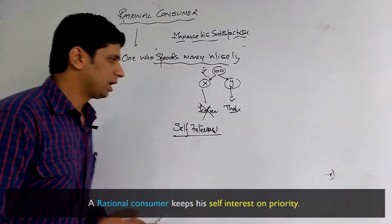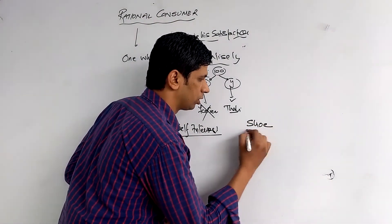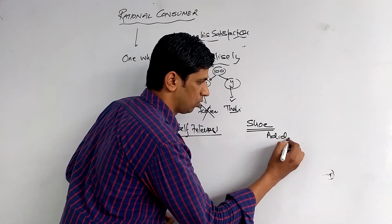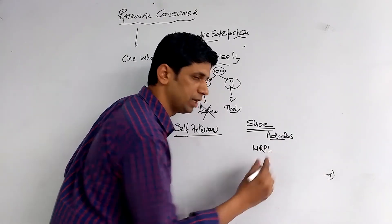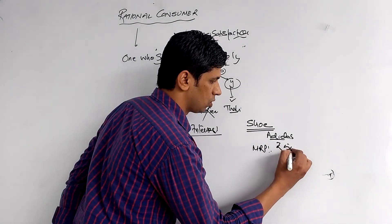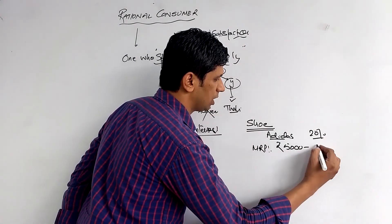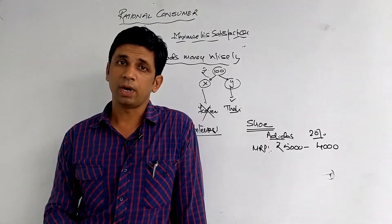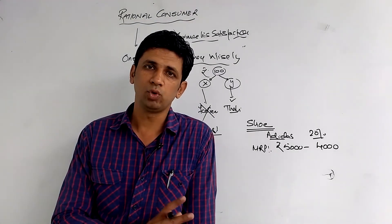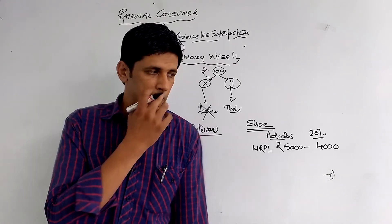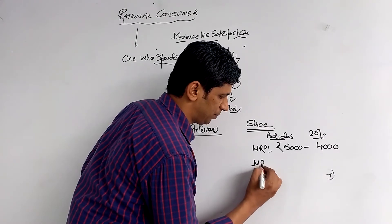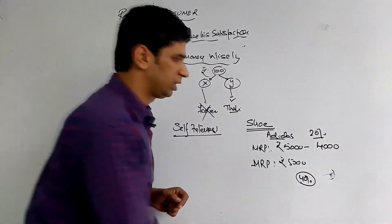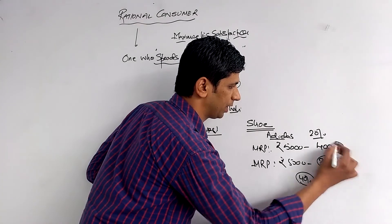For example, if you have to purchase a shoe, you find that the MRP of an Adidas shoe at the nearest outlet is Rs. 5000. With a 20% discount, you receive it for Rs. 4000. Being a rational consumer, you will check once more. You check the same shoe online and find that the same MRP has a 40% discount. 40% of 5000 is Rs. 2000, meaning the shoe is available online at Rs. 3000.